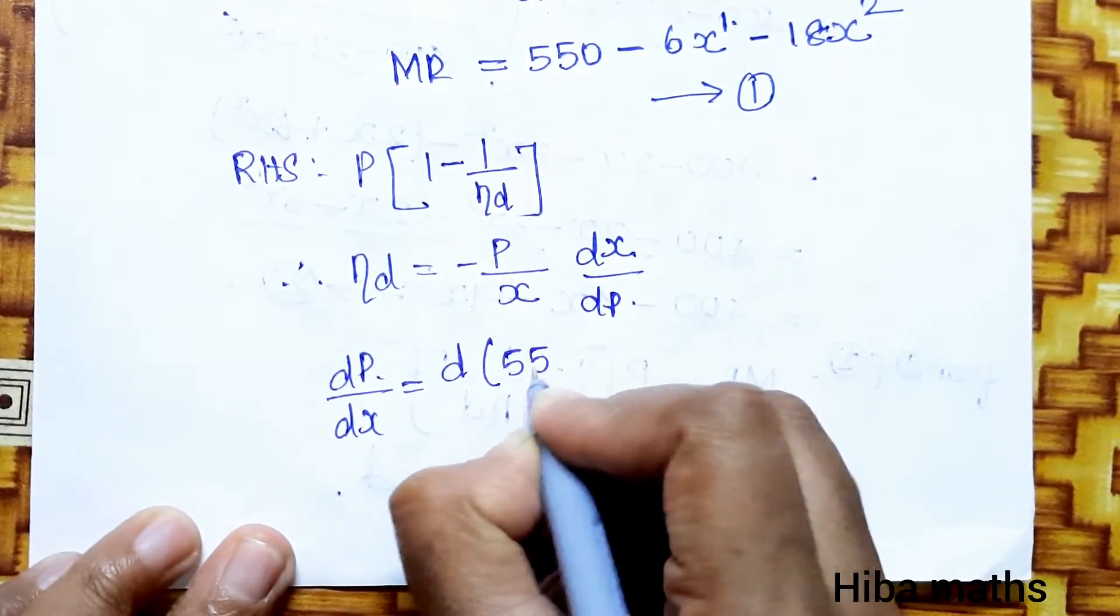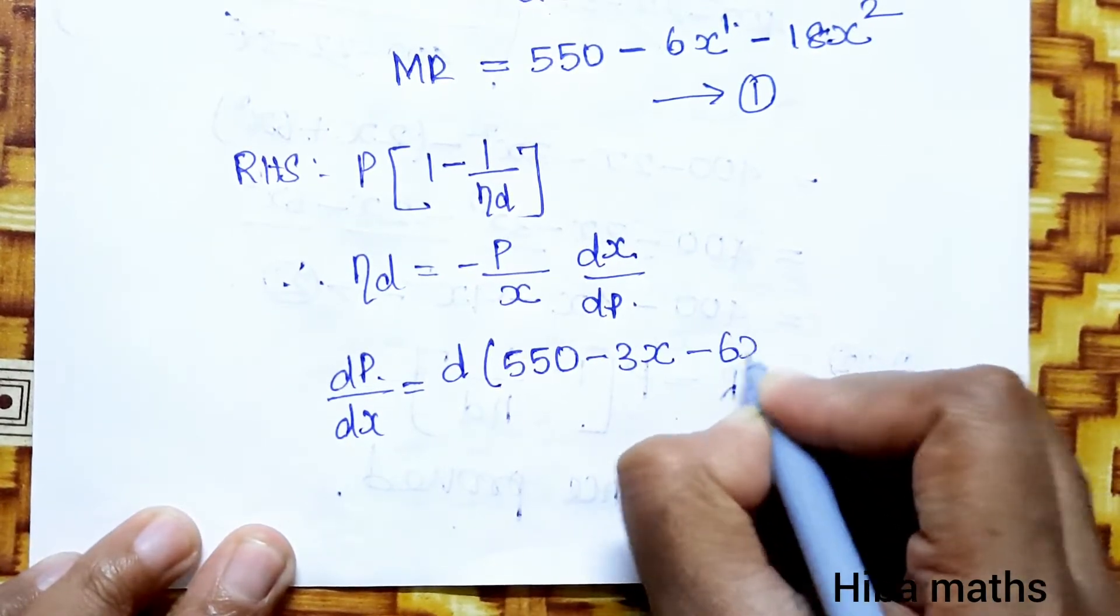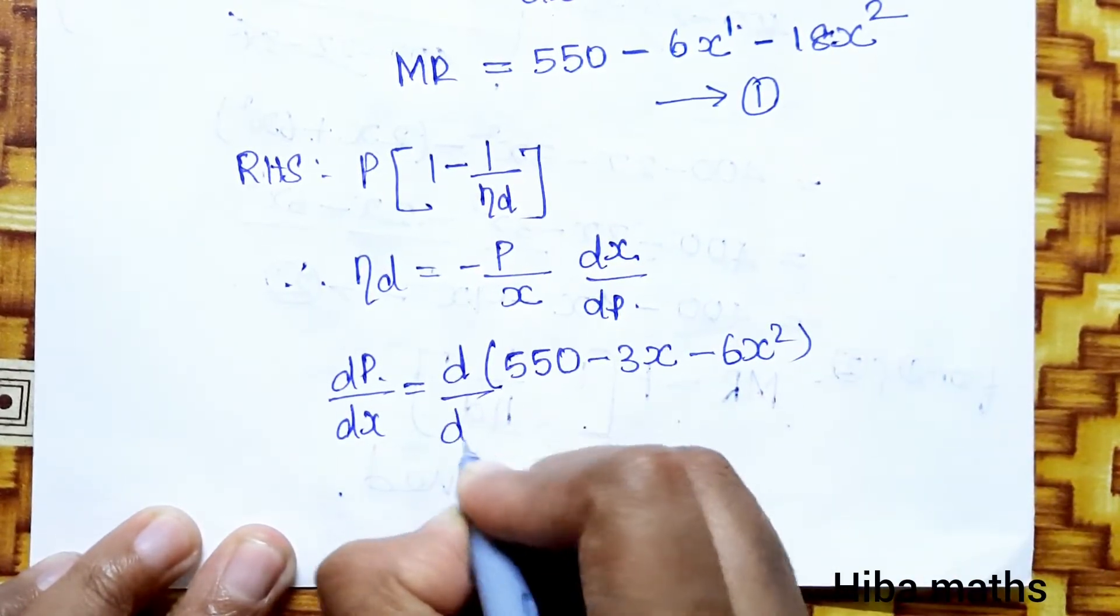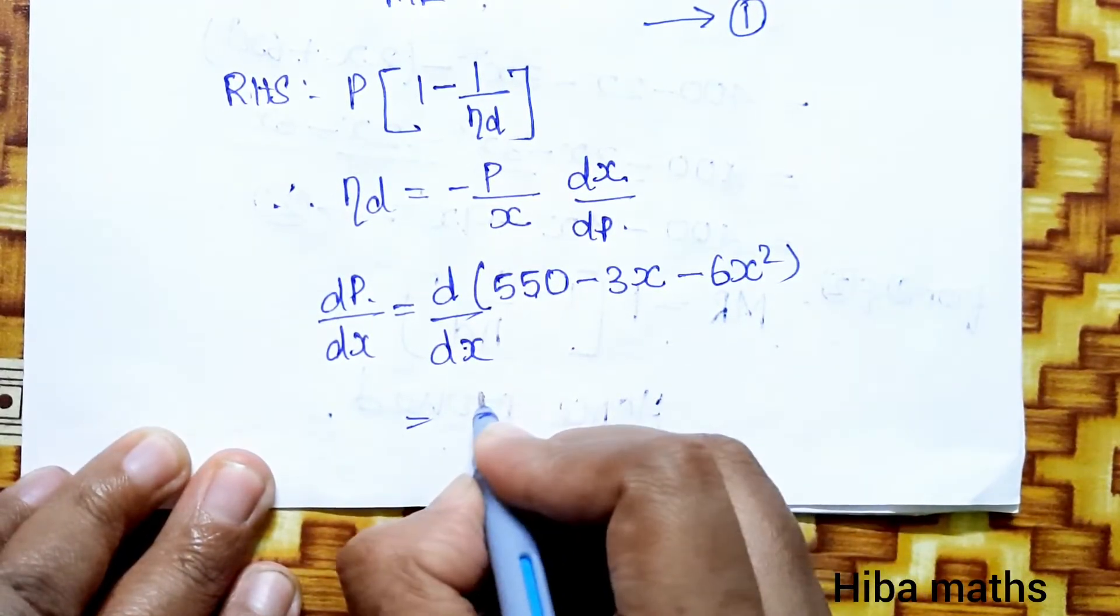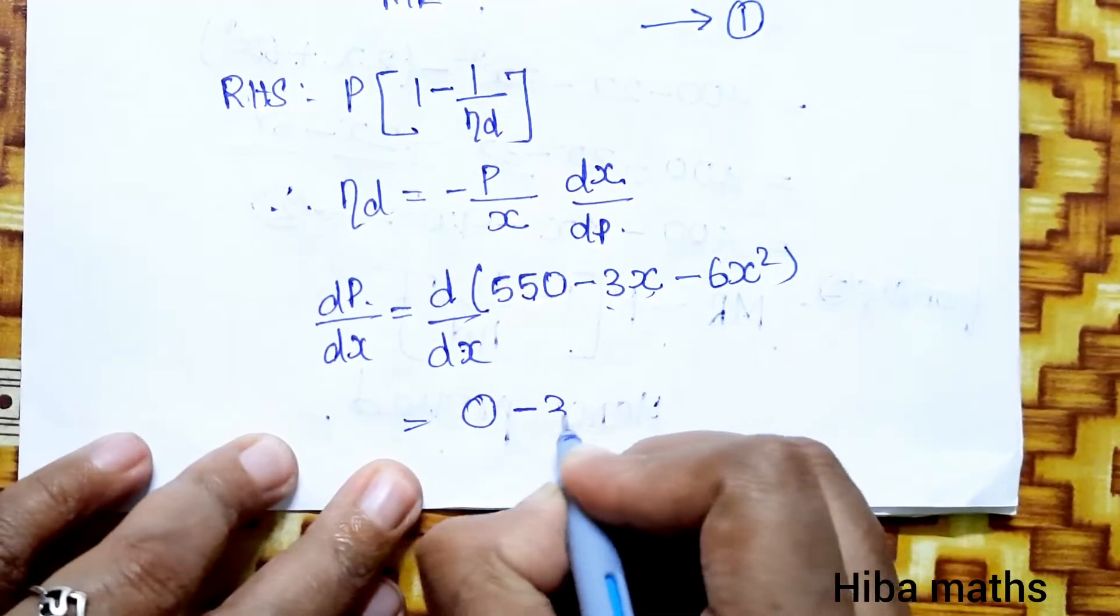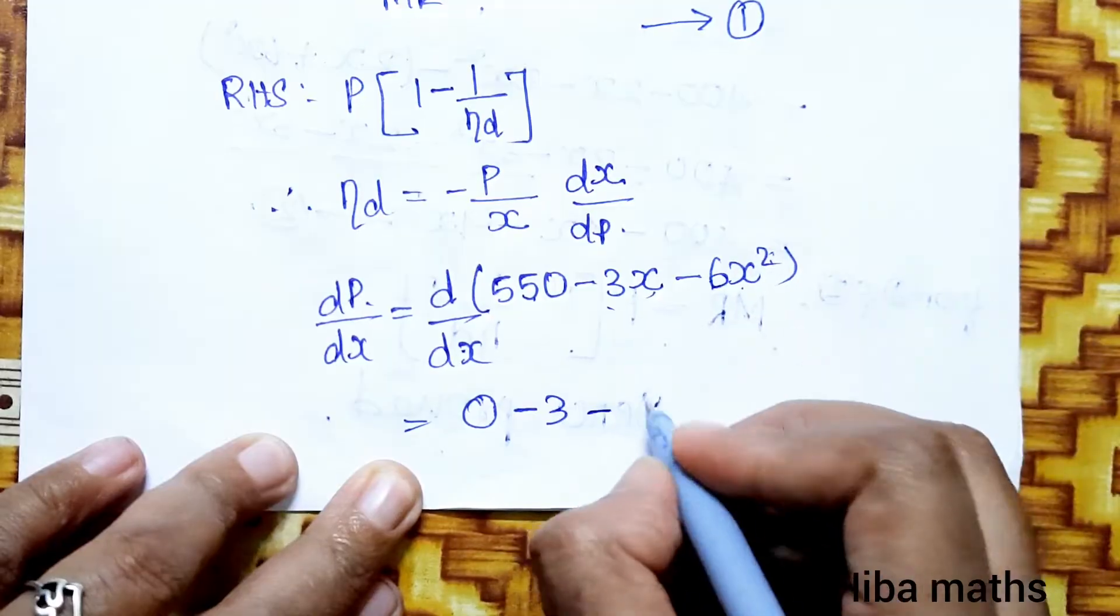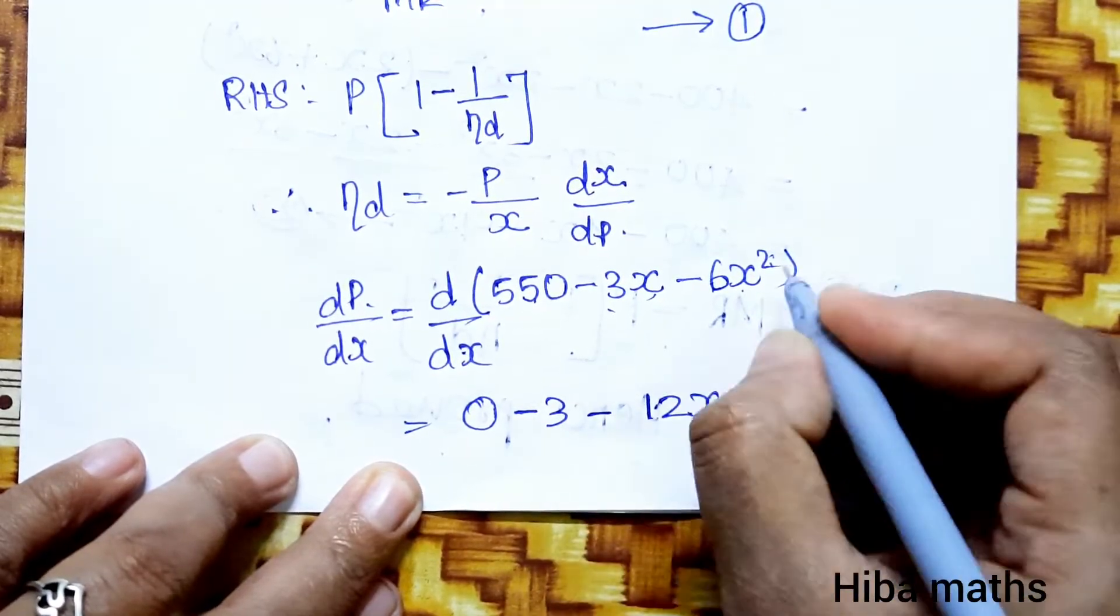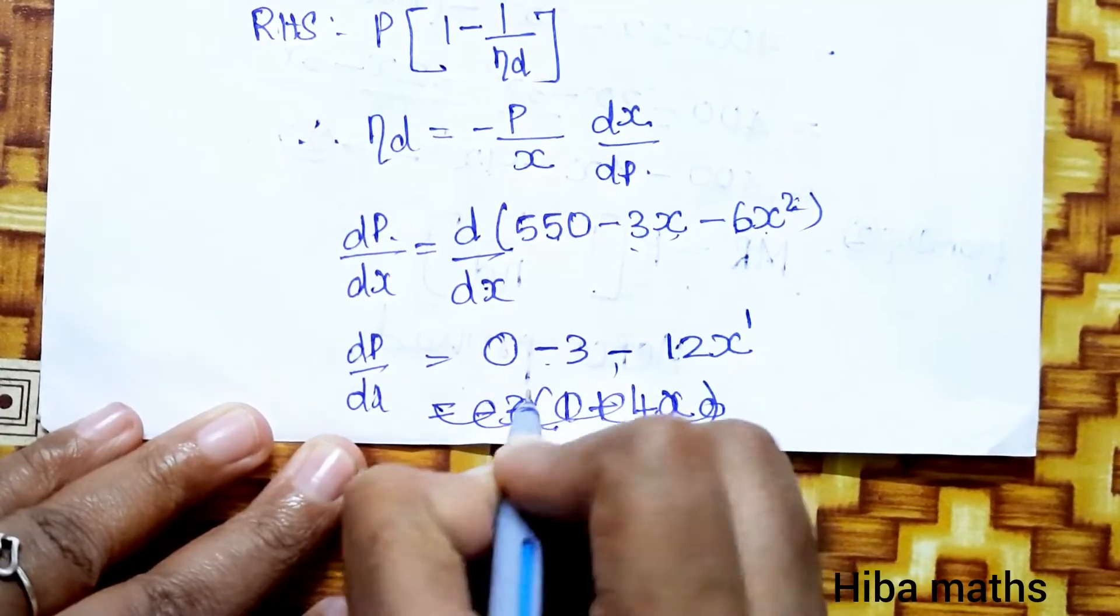First, I will find dP by dx. Differentiating P, P value 550 minus 3x minus 6x square, with respect to x. 550 differentiates to 0, minus 3x gives minus 3, minus 6x square gives minus 12x.